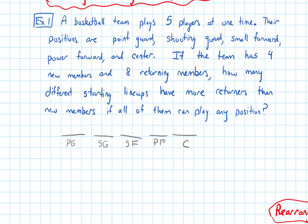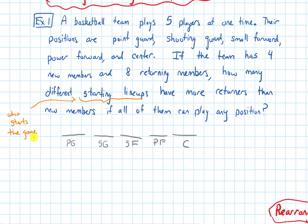When the question is asking for these different starting lineups, a starting lineup is who starts the game. Because over the course of a basketball game different players might be in the game, but a starting lineup is about which of the players get to begin playing the game — which of the 5 players get to begin.